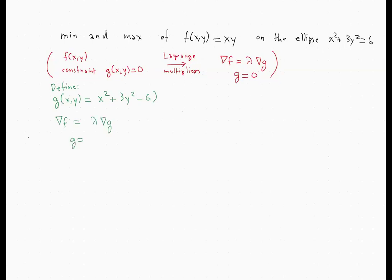What is the gradient of f? It's (y, x), which equals lambda times (2x, 6y). And g = 0 is simply the constraint x² + 3y² = 6. Rewriting the system: y = 2λx, x = 6λy, and x² + 3y² = 6.